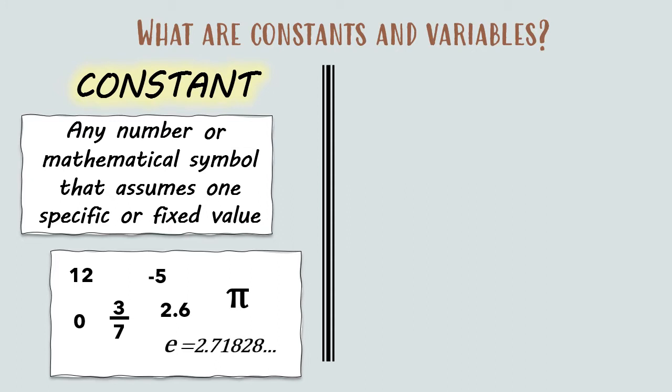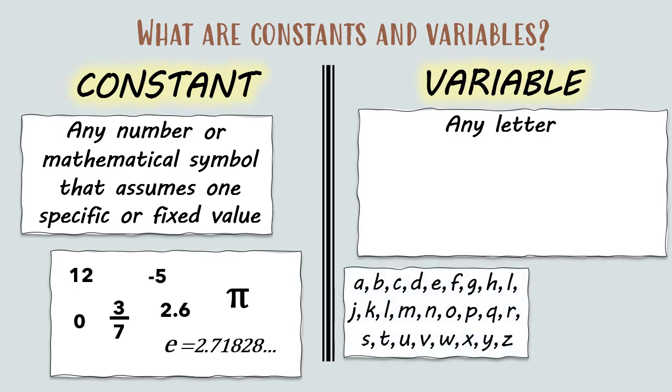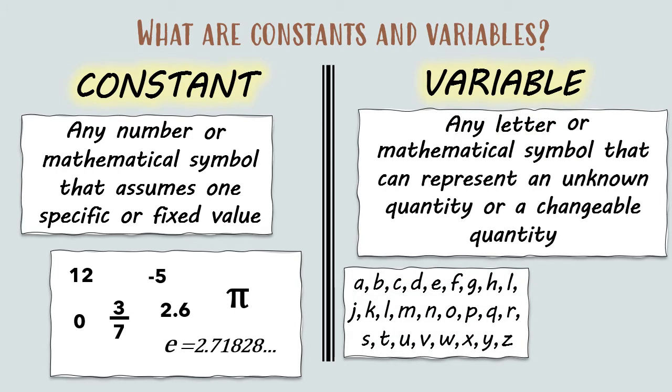On the other hand, a variable can be any letter, that is from A to Z, or it can be a mathematical symbol that can represent an unknown quantity or a changeable quantity. We can use different shapes for variables. Think of the variable as a mystery box that can contain anything.